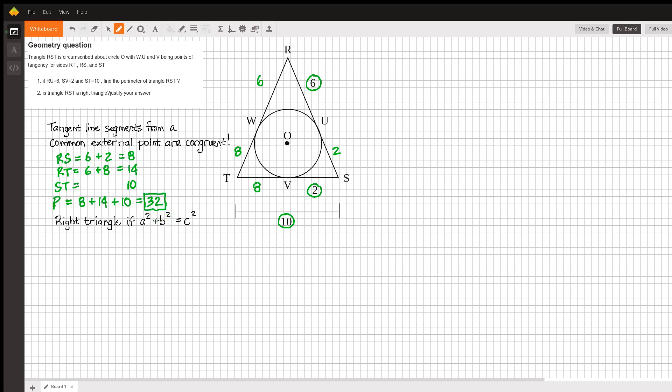We're also asked to answer whether or not this triangle is a right triangle. And the Pythagorean theorem tells us that it can be a right triangle only if the sum of the squares of the two shorter sides is equal to the square of the longest side. A squared plus B squared equals C squared.